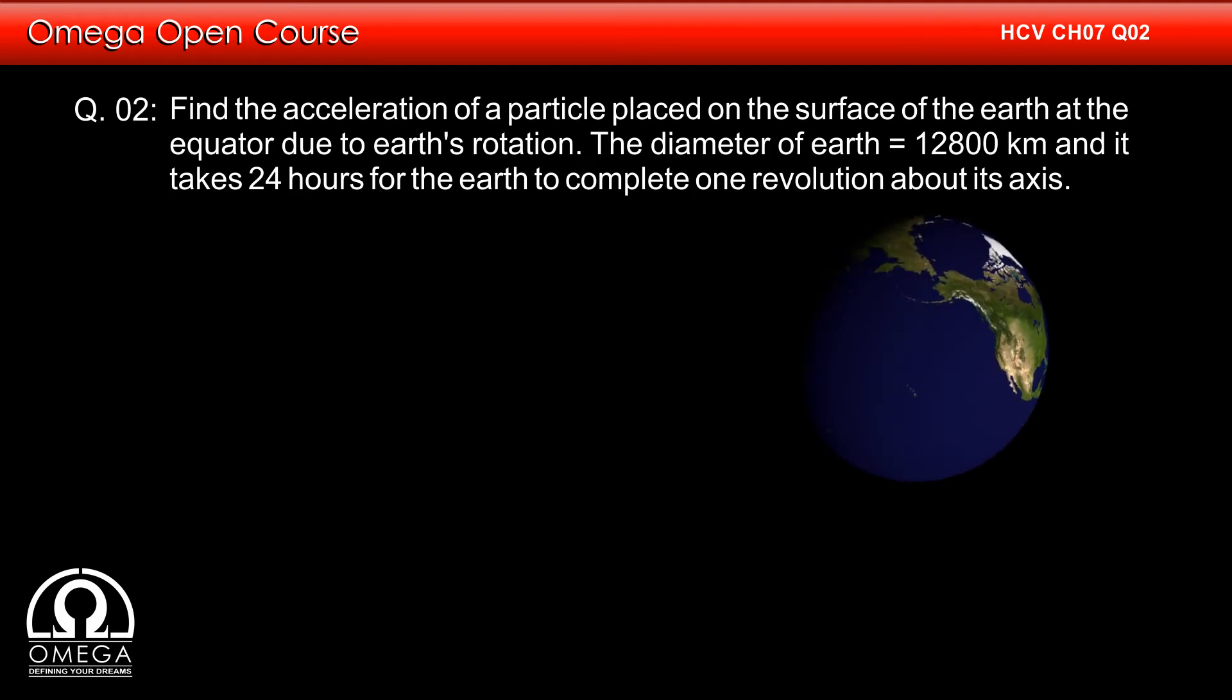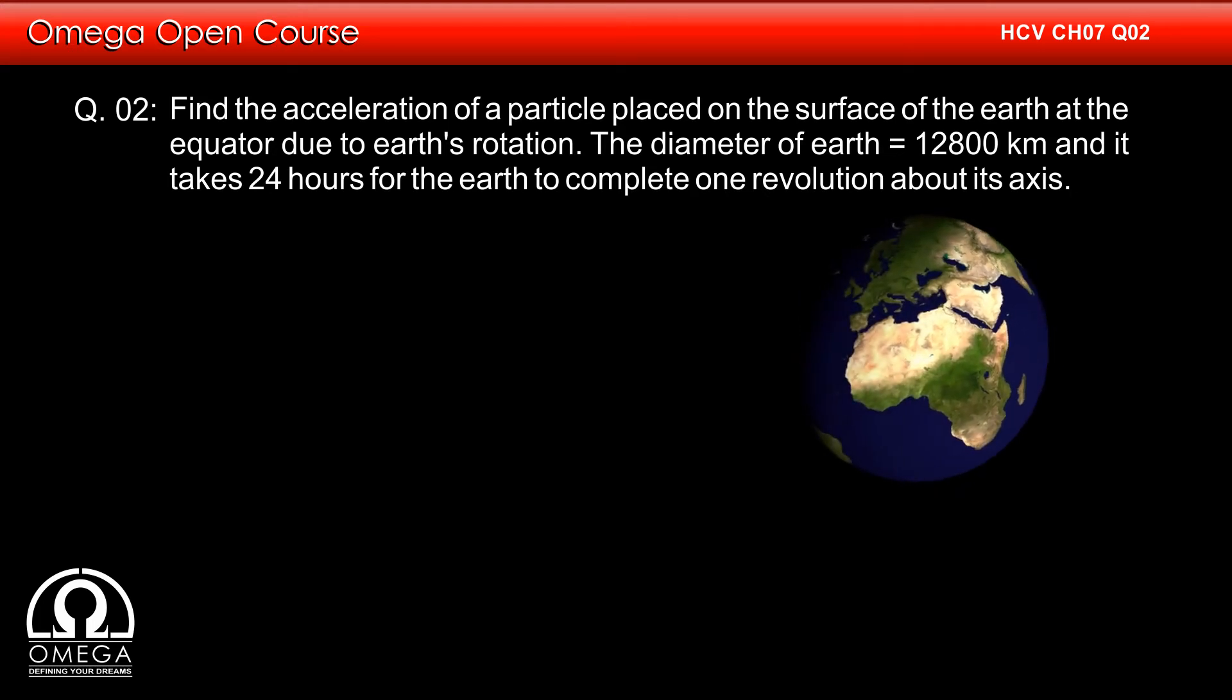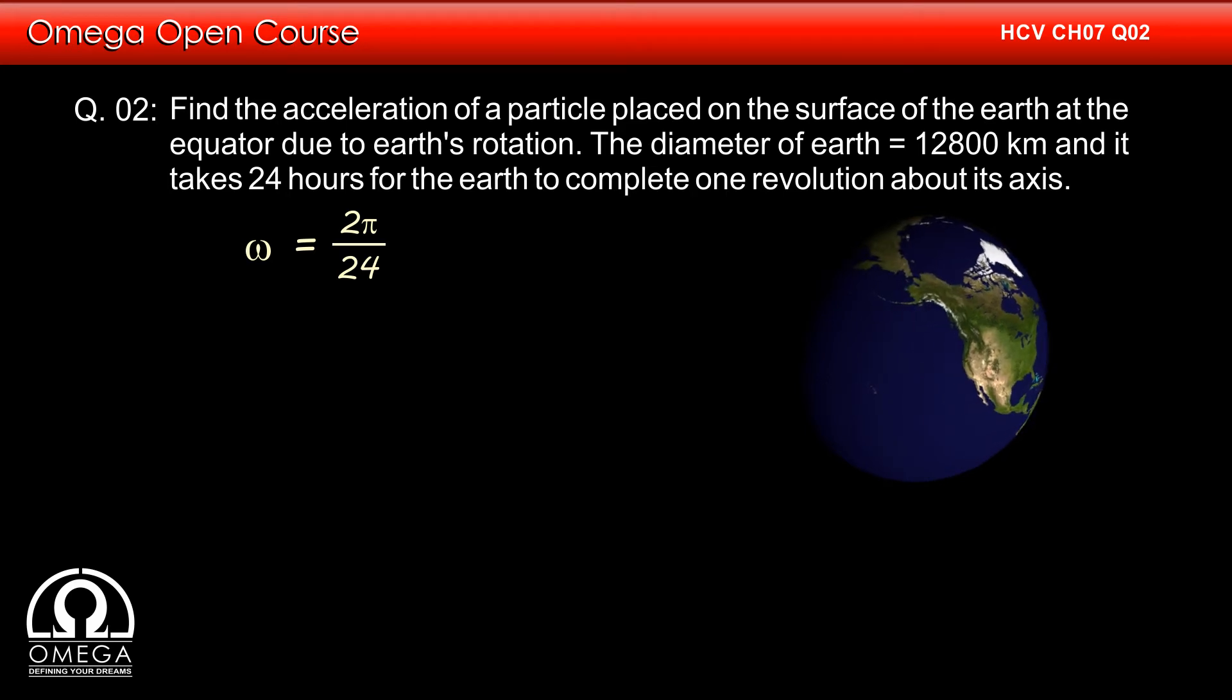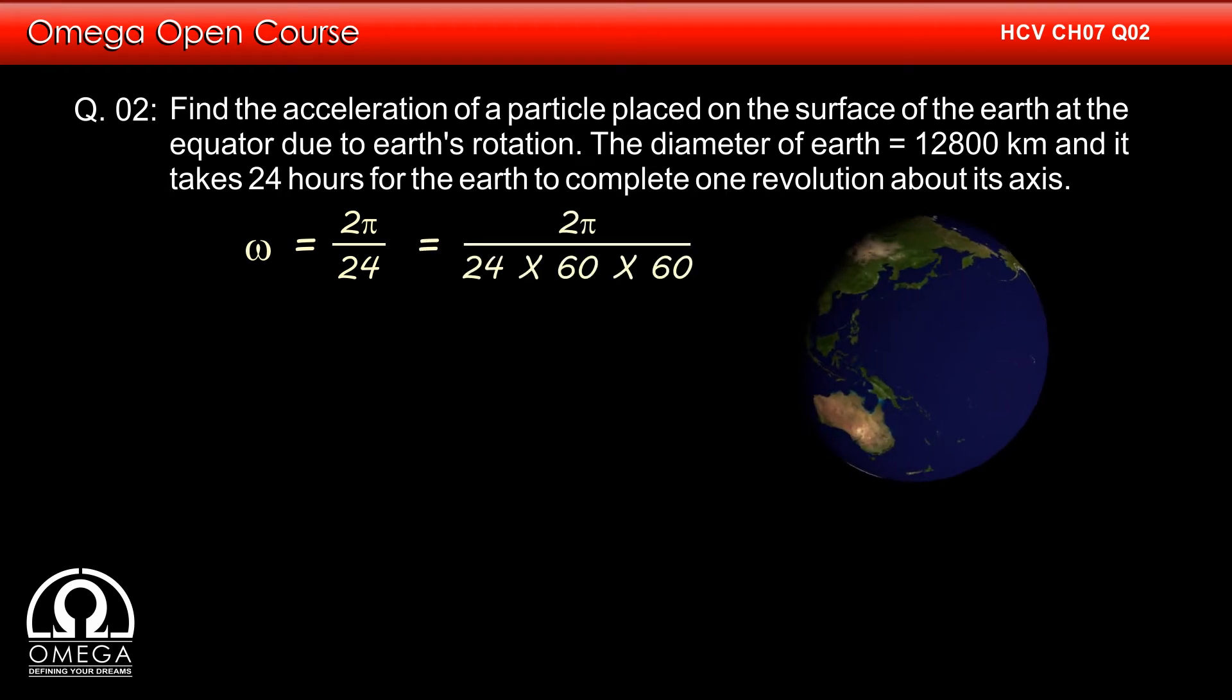Since the Earth completes one rotation in 24 hours, it traverses 2π radians in 24 hours. Therefore, its angular speed is 2π/24 radians per hour or 2π/(24×60×60) radians per second.